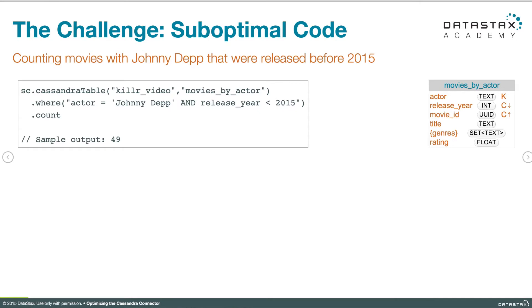Let's take a look at some straightforward but naive and sub-optimal code for counting records from a Cassandra query. Here we do a query on the movies by actor table. We're looking for all Johnny Depp movies released prior to 2015. At the end of that where clause we've got an RDD containing Cassandra row records. We can call the count action on that RDD and we'll get a count back.